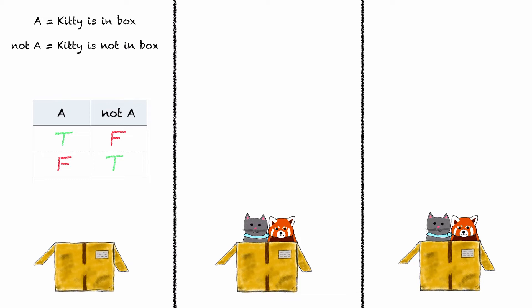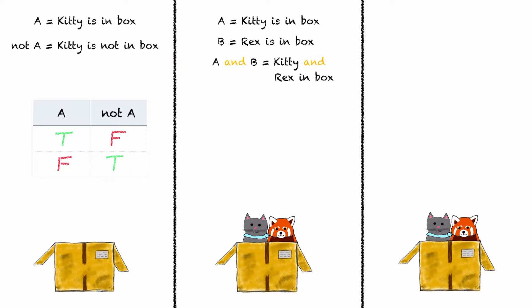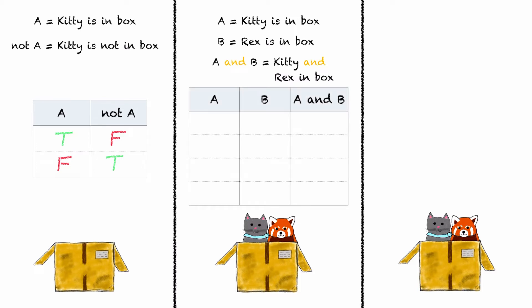Let's look at the truth table for an AND statement, also known as a conjunction. We have the two atomic statements A — 'Kitty is in the box' — and B — 'Rex is in the box' — and the proposition that both Rex and Kitty are in the box. There are four distinct cases, so the truth table must have four rows. As we see in the picture, both Rex and Kitty are in the box, therefore statements A and B are both true, and the conjunction is also true. If Rex now leaves the box, statement A remains true while statement B becomes false, and the compound proposition becomes false.